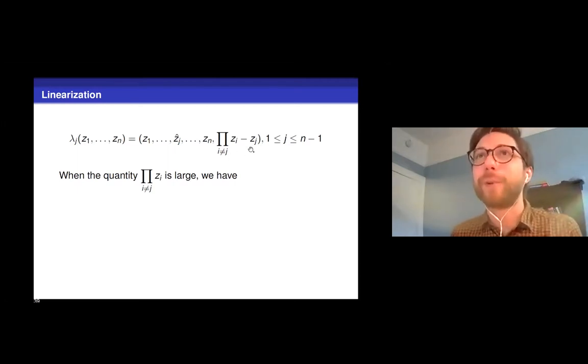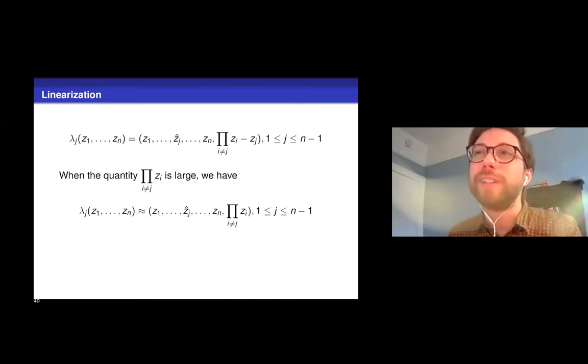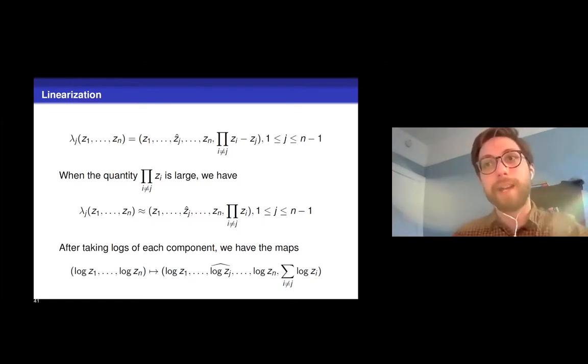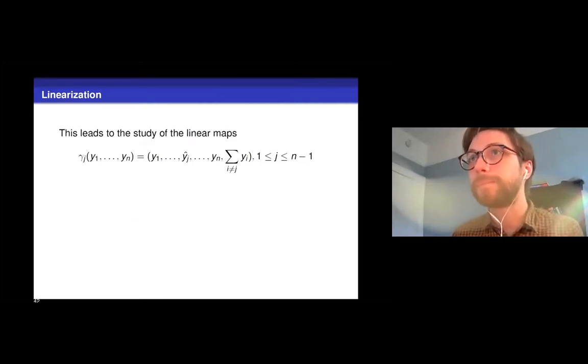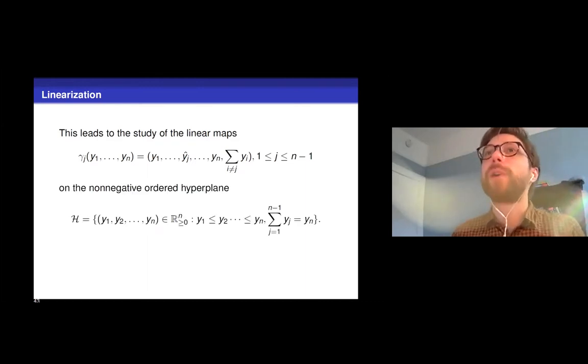Can I turn that product into a sum? Can I take a log maybe of each coordinate and get a linear map here? And you can't quite do that because the last coordinate of this move is not exactly a product. It's a product minus something else. But if that product is very large, you can kind of get away with approximating that coordinate as just the product of the zᵢ's where i is not equal to j. And if you do that, then you can go ahead and take logs. And what ends up happening is you induce these linear maps now, which are approximately corresponding to the original non-linear maps that we were trying to study.